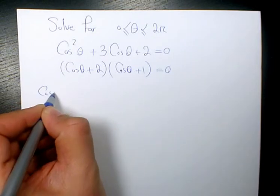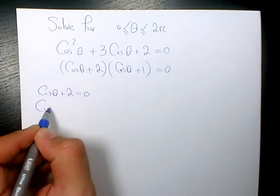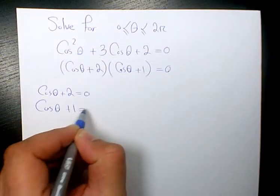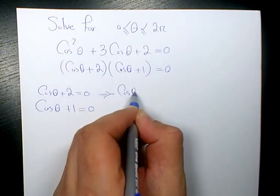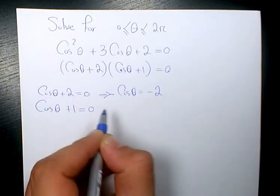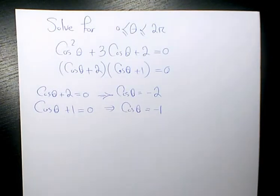The first expression is cosine theta plus 2 equals to 0, and the second one is cosine theta plus 1 equals to 0. Then when we isolate it, when we solve it for cosine theta, that will be negative 2, and here that will be cosine theta equals to negative 1. So the first one is cosine theta equals to negative 2.